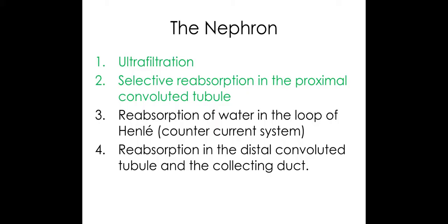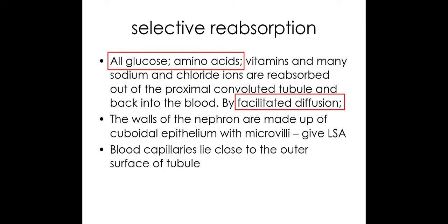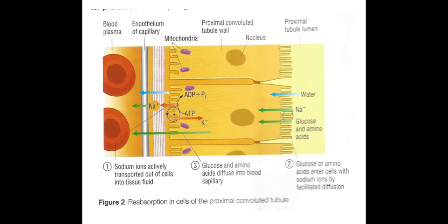We want glucose and amino acids back into the blood because they're useful things for the body. So we selectively reabsorb some of those useful products, and this occurs within the proximal convoluted tubule. We want back all the glucose and all the amino acids, and this occurs by facilitated diffusion — meaning we need a protein to do this, and it goes along the concentration gradient.